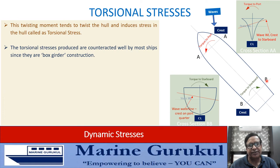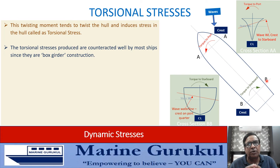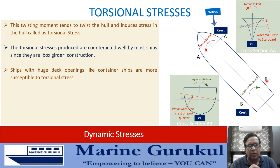Torsional stresses are well countered by most ships because a ship is like a box girder — built with the keel, double bottom, sides, and deck forming a box structure, giving it inherent strength. However, ships with large openings like hatchway openings on deck — such as container ships — can be problematic, requiring compensation for loss of strength, typically through torsional boxes in the ship's construction.